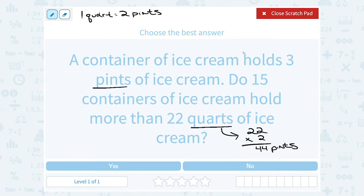Okay and we know there's three pints in each container and we have 15 containers. So to figure out all the pints in those 15 containers we would have to multiply. 15 containers that are each three pints. Let's multiply that together to figure out our total number of pints.